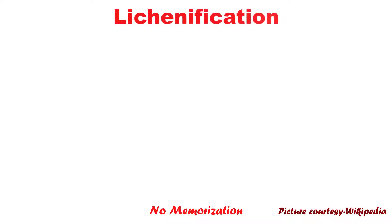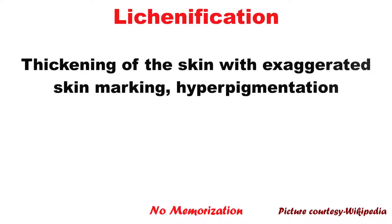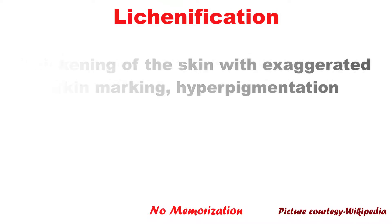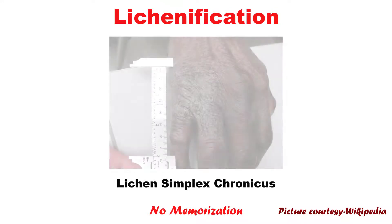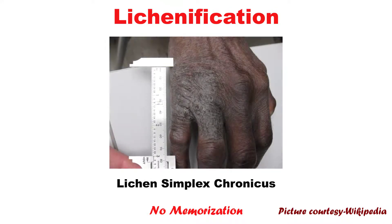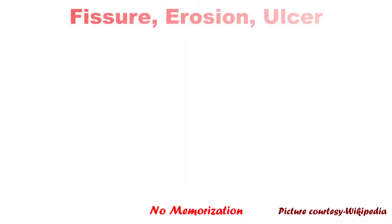Now lichenification. It is thickening of the skin with exaggerated skin marking and hyperpigmentation. For example, lichen simplex chronicus. Here you can see a picture. It is caused by excessive and uncontrollable scratching.